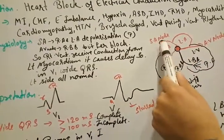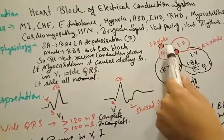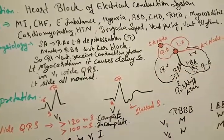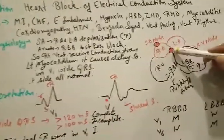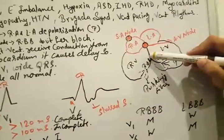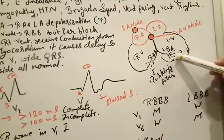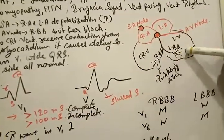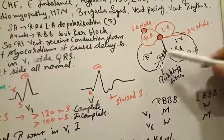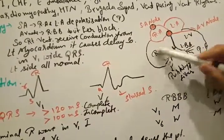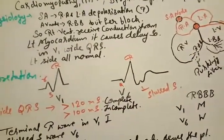There is right atrial and left atrial depolarization and repolarization. Then through the AV node it goes to the bundle branch, which divides into right bundle and left bundle branch. Then to the Purkinje fibers, left ventricular depolarization occurs and right ventricular depolarization occurs after that.